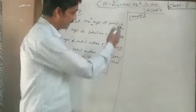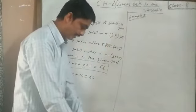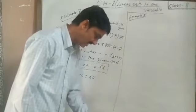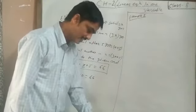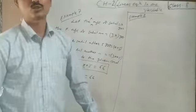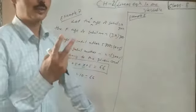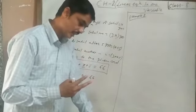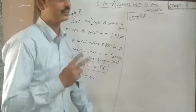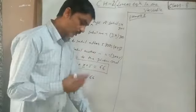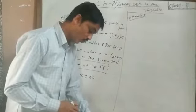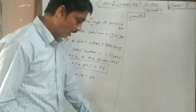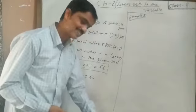Now the next example, example number 8. Buncee has 3 times as many 2-rupee coins as 5-rupee coins. In this question, a person has two types of coin denominations: 2 rupees and 5 rupees. Another condition is given: the total sum of all the coins is 77 rupees. We need to find out how many coins of each denomination he has.